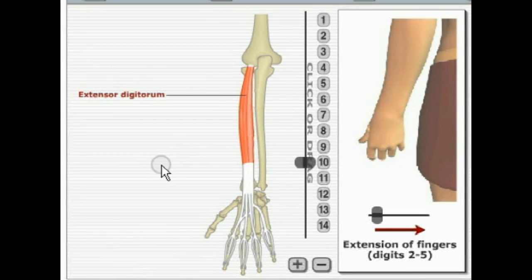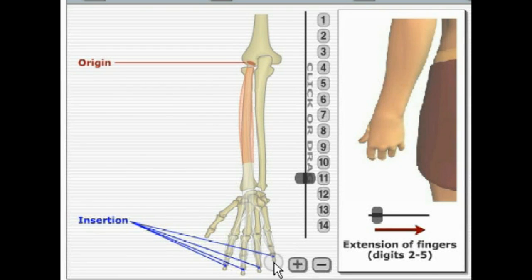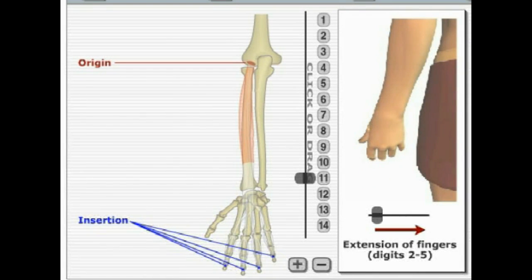Here is extensor digitorum. It originates on the lateral epicondyle of the humerus and inserts on the middle and distal phalanges of each finger. The actions include extension of fingers two through five.